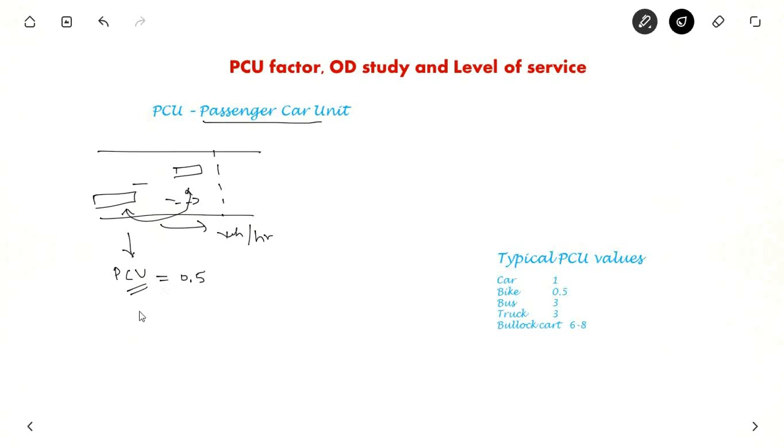So this PCU factor depends on vehicle dimension, speed of the vehicle which it can go and other factors. But these two are the important factors. So based on this, we have passenger car unit. So the car PCU is 1. And for bike, two bikes can be a car. So it is 0.5.